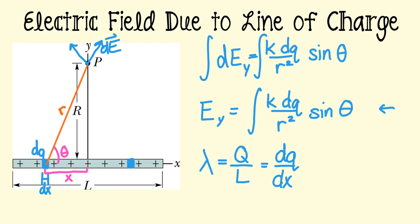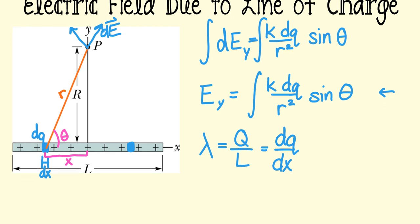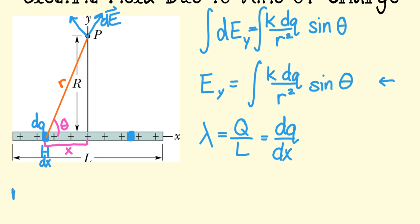Additionally, I know that R can be expressed as the square root of big R squared plus x squared. Finally, I know that the sine of theta, sine is opposite over hypotenuse. So the opposite is capital R divided by the hypotenuse, which is little r, or big R squared plus x squared, the square root.